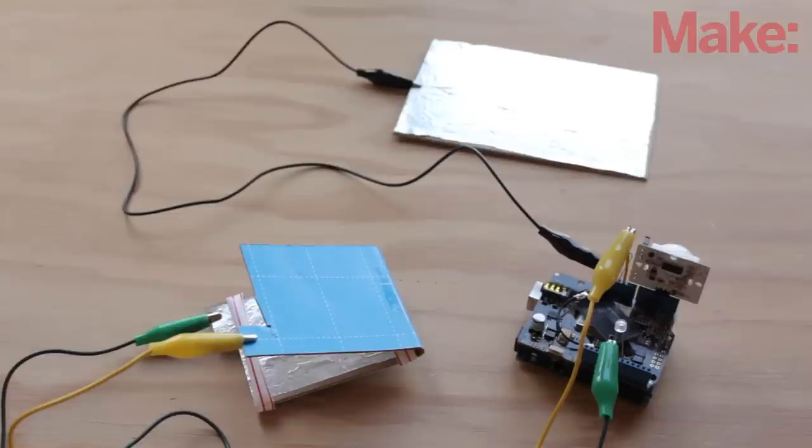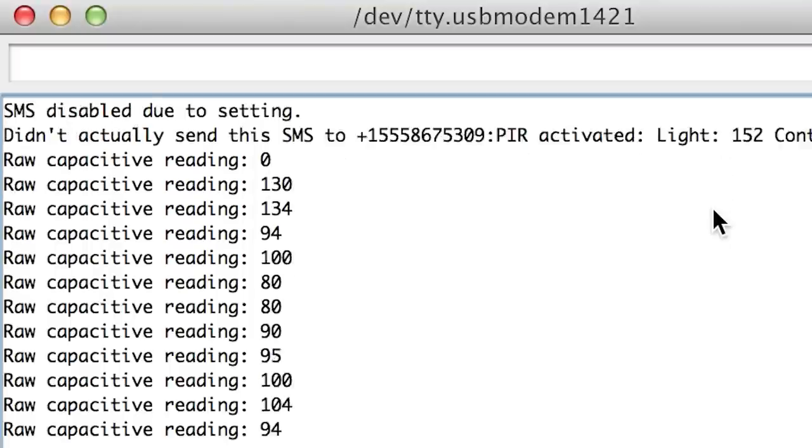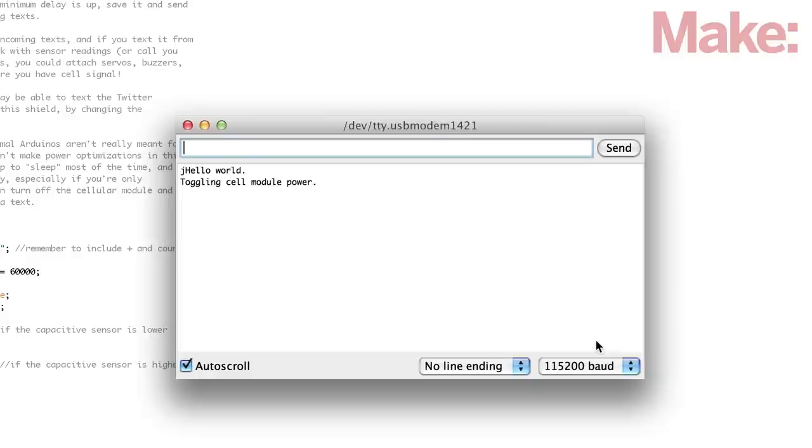Before we can deploy the project, we need to do some testing. Because this project sends text messages, and text messages can cost you money, texting is disabled by default. We can test the sensors with texting disabled because the Arduino will print to the serial monitor when it would have sent a text. Open the Arduino serial monitor with the baud rate set to 115200. You should be able to see a Hello World message shortly followed by the GSM shield turning on.